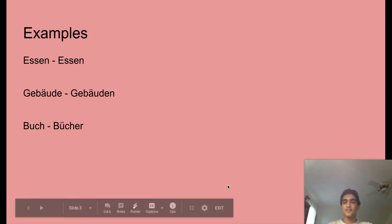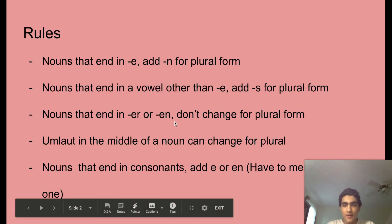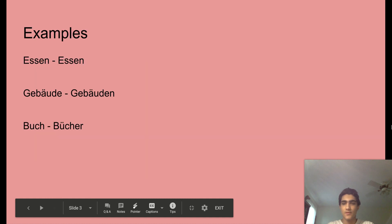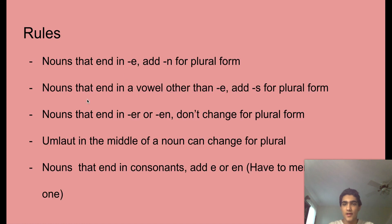Now let's look at some examples. So Essen, which is food, is Essen. The reason why? Look here. Nouns that end in E-R or E-N don't change for the plural form. Gebäude becomes Gebäuden for the plural. Why? Well, let's look here. Nouns that end in an E, you add N for the plural form.